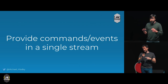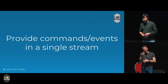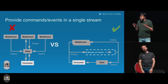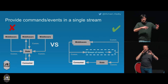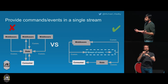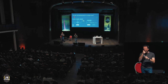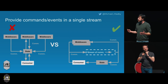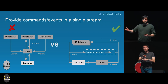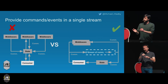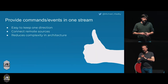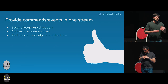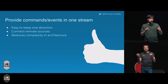The next principle is to provide your commands or events in a single stream. On the right side you see a confusing graph — a lot of boxes, a lot of arrows — where everyone communicates in a different way with your state. What I really recommend is to create a channel that collects all your commands into one single stream, and this stream forwards the commands to your state. No matter if a command is sent from a consumer or triggered by some middleware, you always send it to the same source. This reduces complexity in your architecture, enables you to connect multiple remote sources, and keeps your data flow consistent.